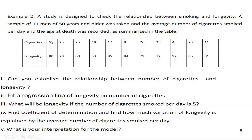For example, somebody took 5 cigarettes on average every day and he died at the age of 80. Somebody taking 23 cigarettes per day on average is going to die at the age of 78, and so on. This is the number of average cigarettes per day taken by people who are 50 or more years old, and this is the age at which they are going to die — this is called longevity.